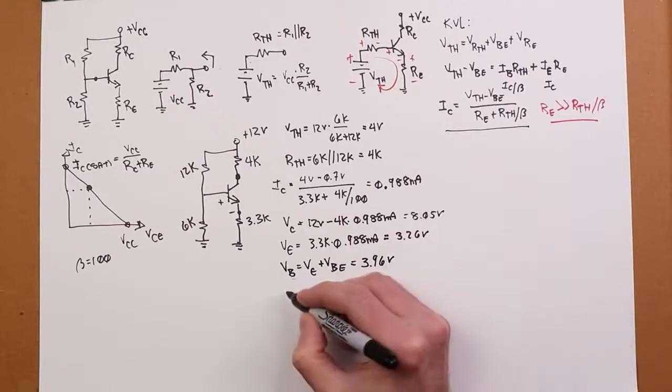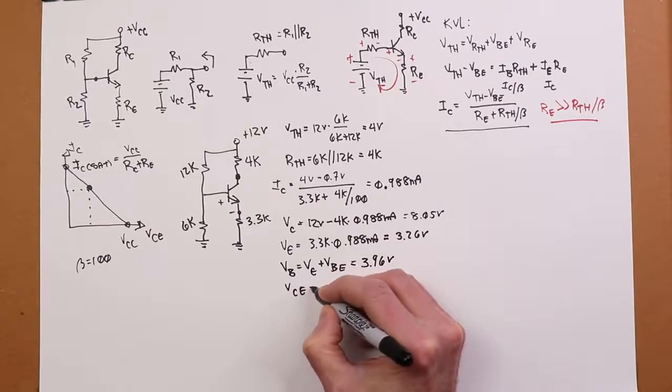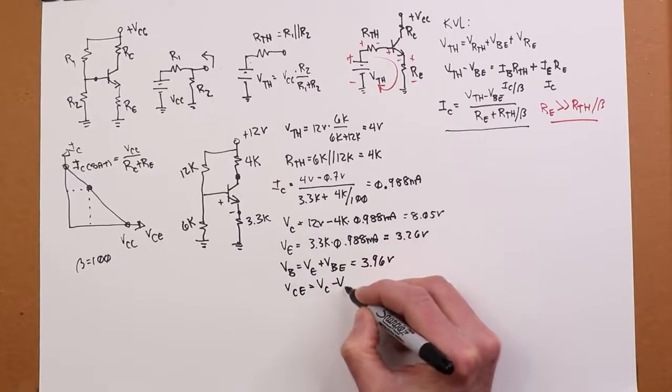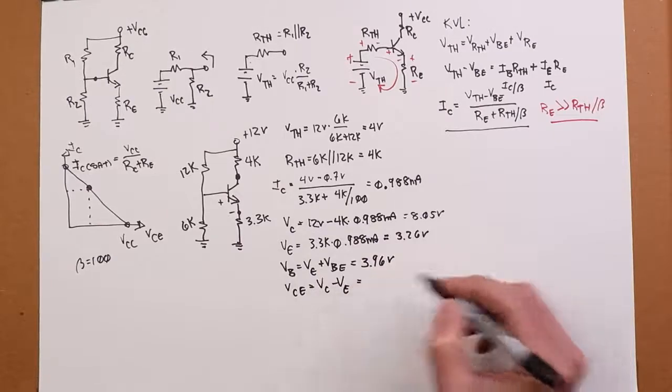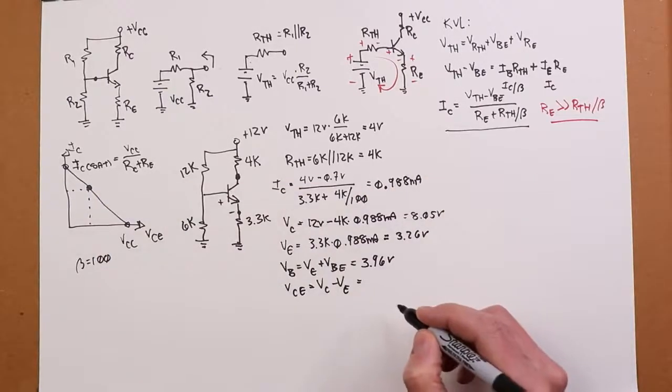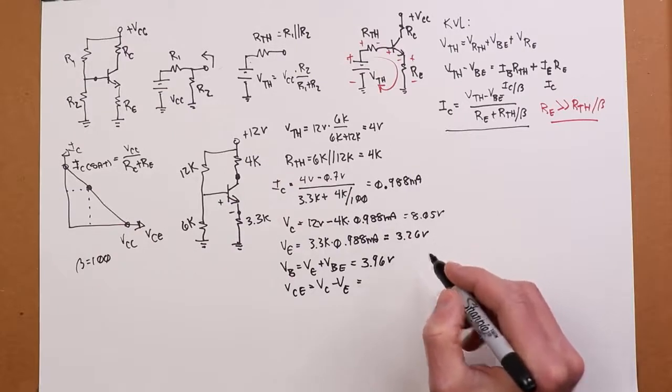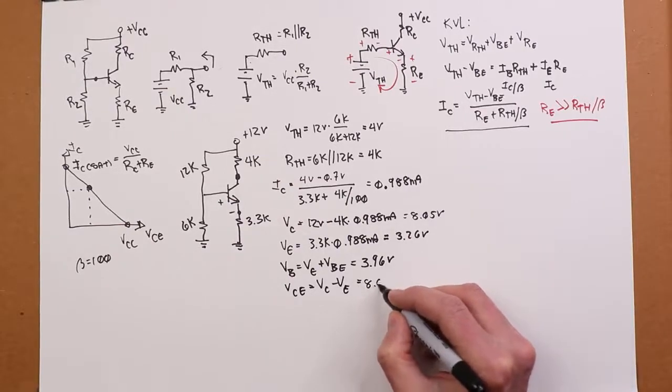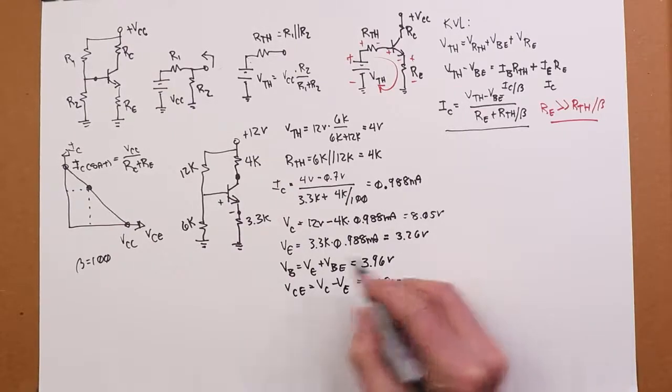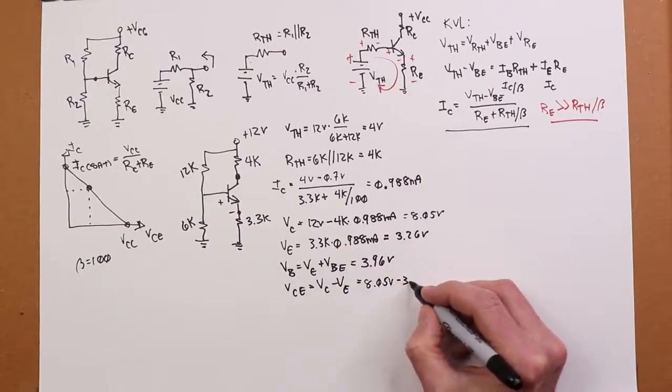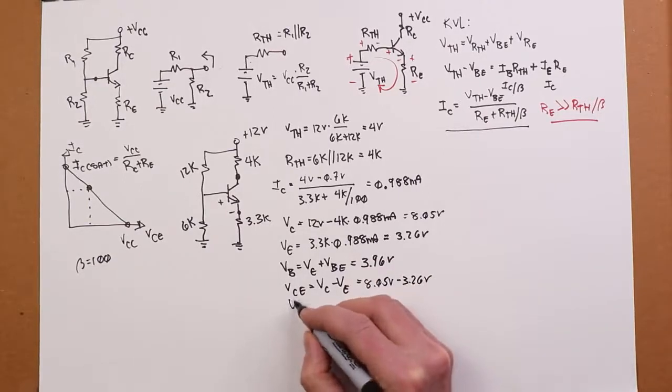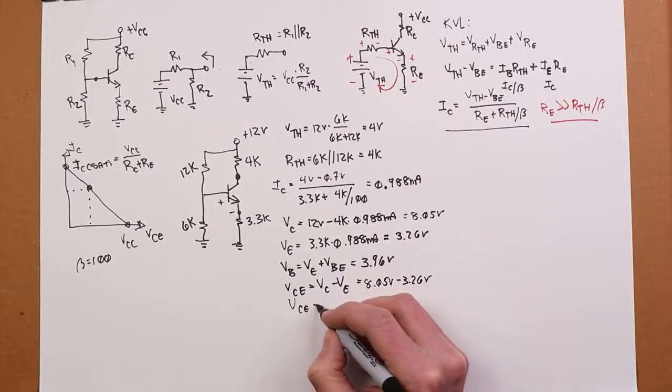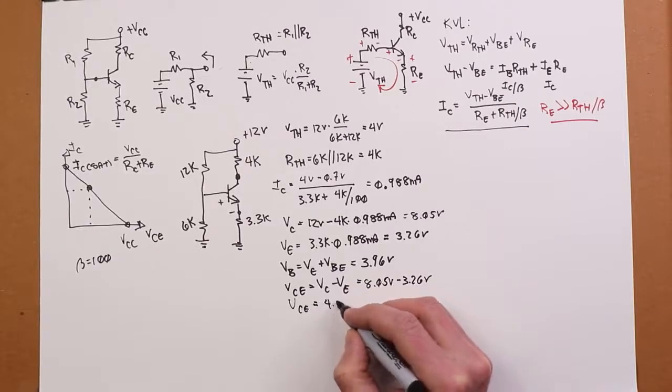Of course, I'd also like to find VCE, which by definition is VC minus VE. I want to make a load line. So, I've got my VCE is 8.05, the VE is 3.26. So, VCE is 4.79 volts.